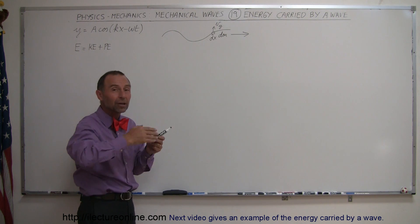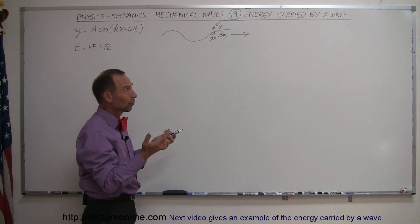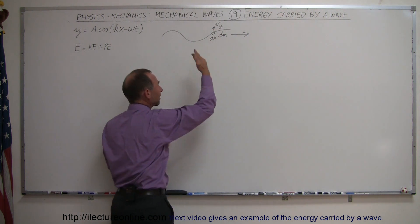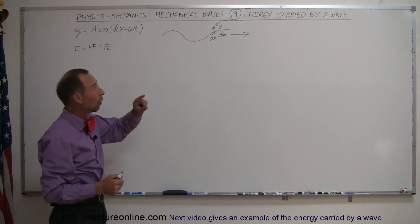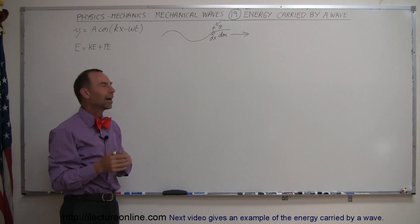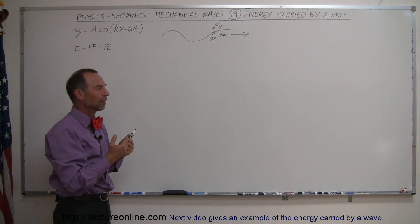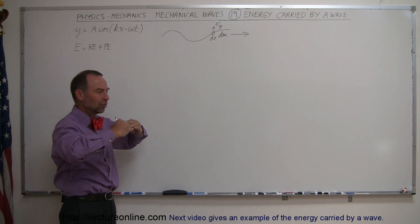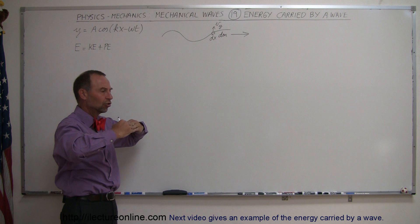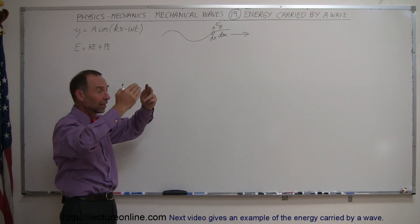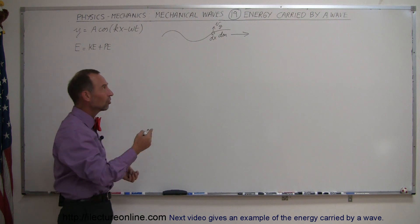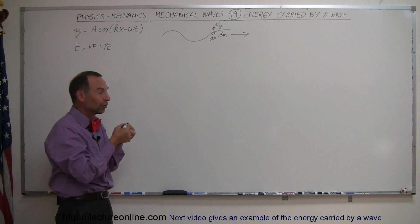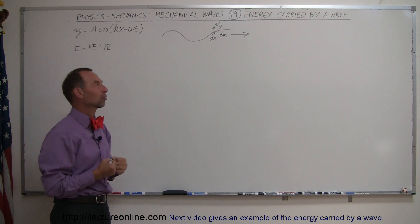First, it experiences kinetic energy because it's moving up and down, and kinetic energy is one-half mv squared — so we take a small amount of mass, its velocity squared times one-half, and we have the energy of that piece. At the same time, the string experiences tension, and the tension constantly changes, because sometimes the string is deformed in shape, causing increased tension, and when it returns to equilibrium, that's decreased tension. The change in tension causes work to be performed, and that work results in potential energy, just like stretching a spring.